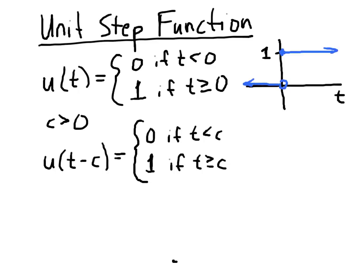So this is the function that has value 0 if t is less than c, and value 1 if t is greater than or equal to c. Its graph looks like this: 0 until we reach c, after which the value is 1, so we can think of this function as being a switch that switches on at time c.